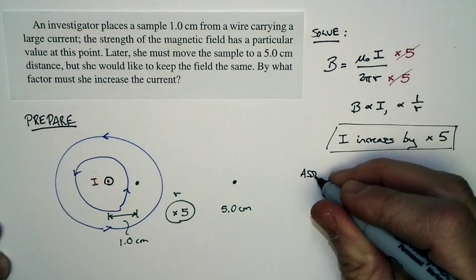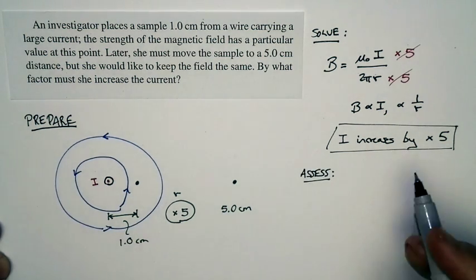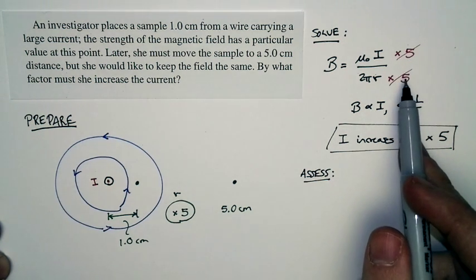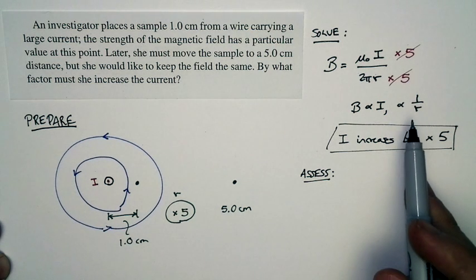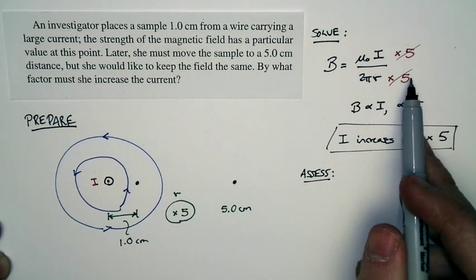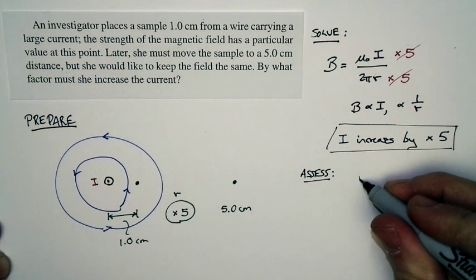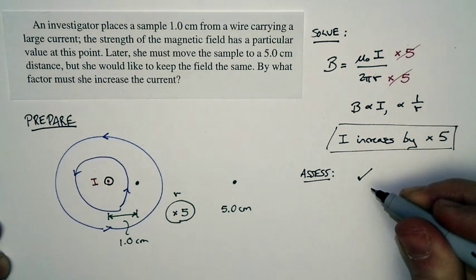To assess this, we'll just note that this is reasonable. It's proportional to the current, it's inversely proportional to the distance. And so if I increase the distance, I've got to increase the current in order to keep everything the same. And so the answer matches with how we know the world works.